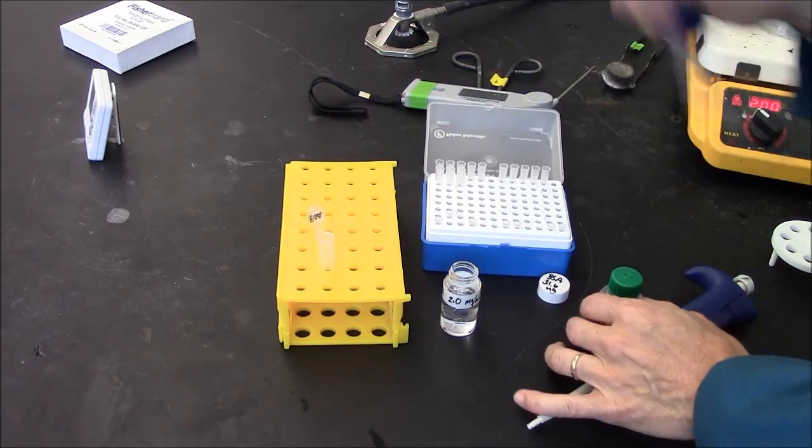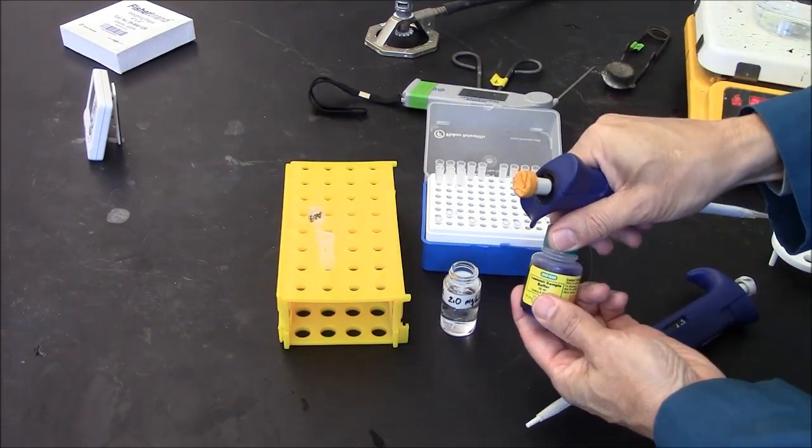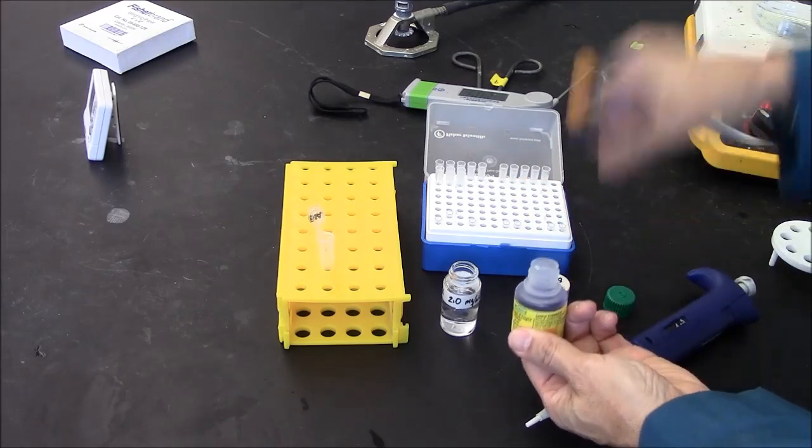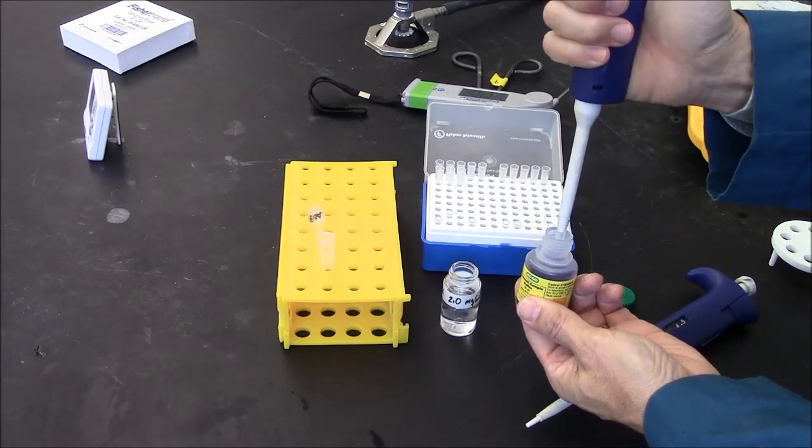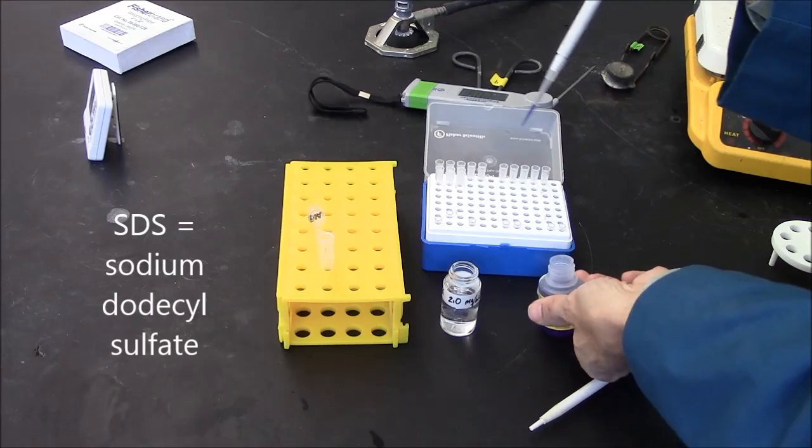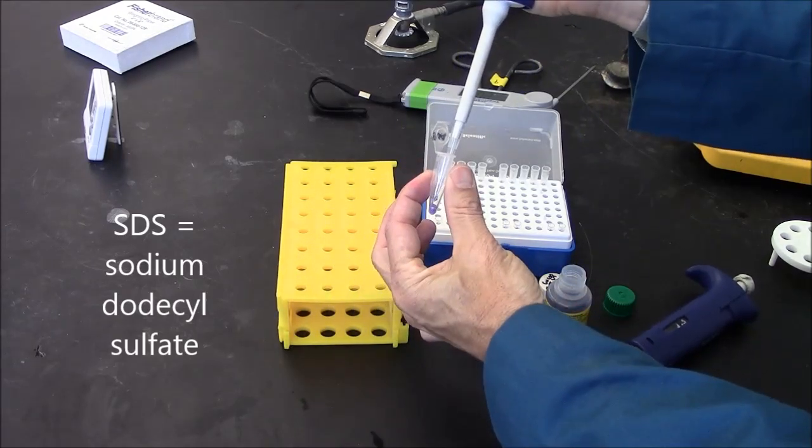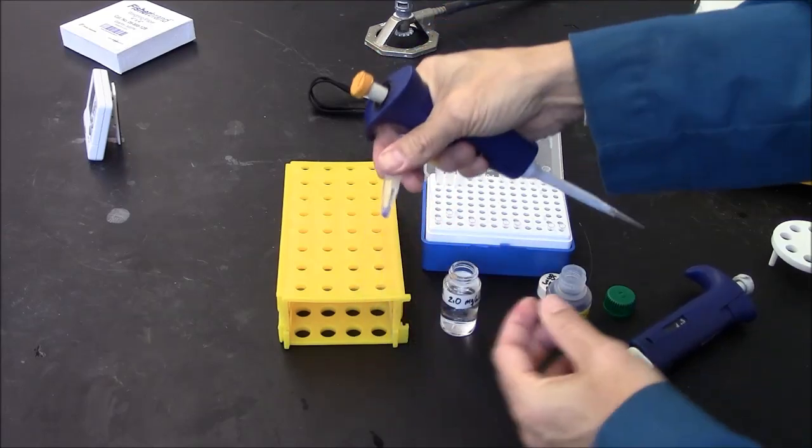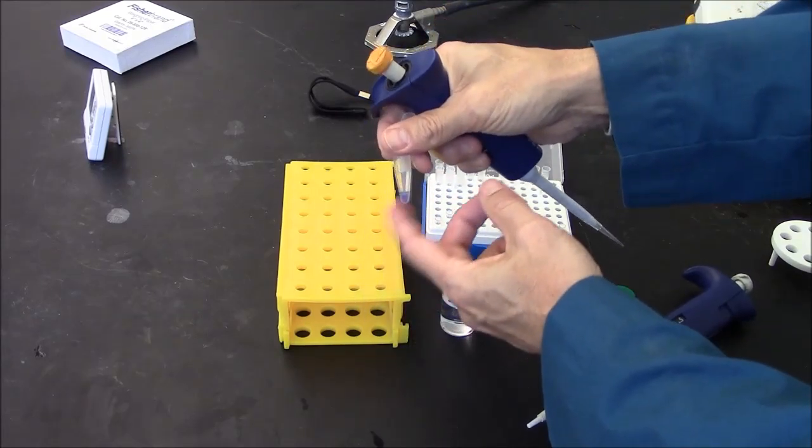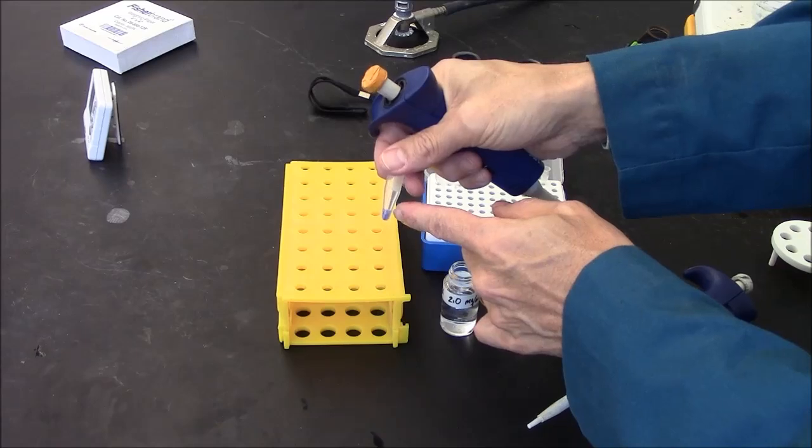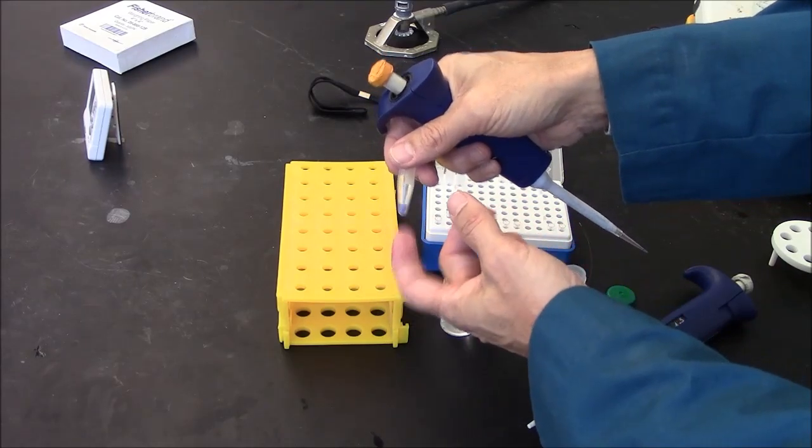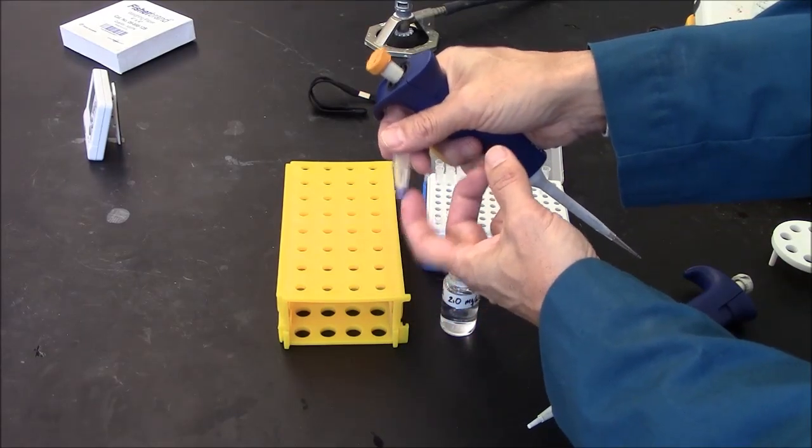Then I need 25 microliters of this purple Lemely sample buffer containing SDS to denature the proteins. That is actually dense, the purple is dense. You'll get some foam here because it has detergent. SDS is a detergent. I'm just gently agitating that.